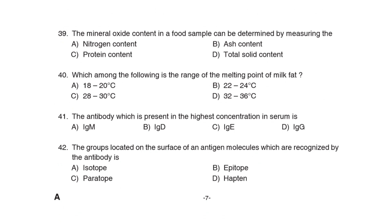39th Question: The mineral oxide content in a food sample can be determined by measuring Option B: Ash content. 40th Question: Which among the following is the range of the melting point of milk fat? Correct Answer: Option D: 30 to 36 degrees Celsius.